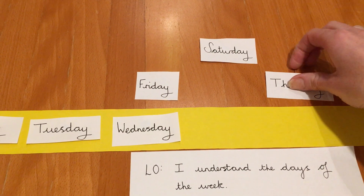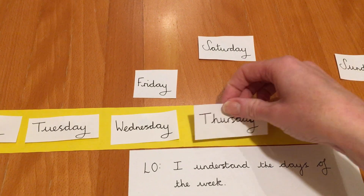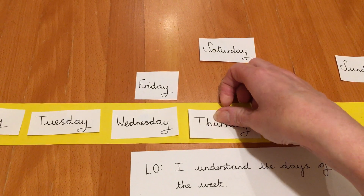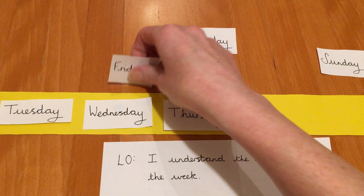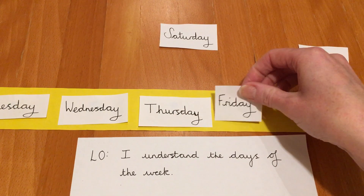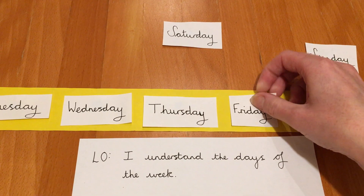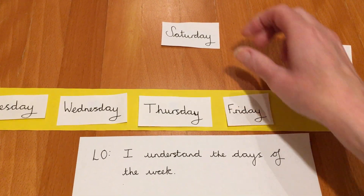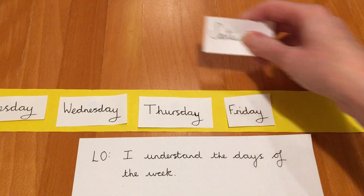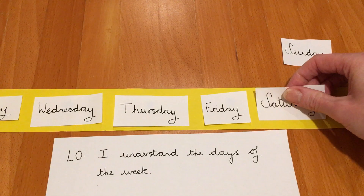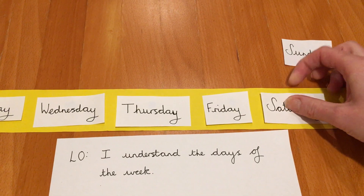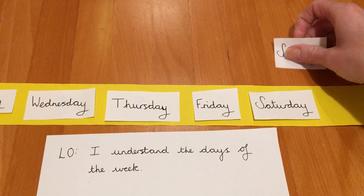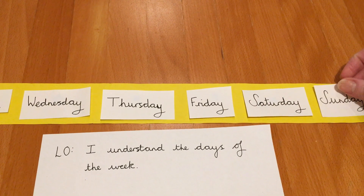And what follows Wednesday? Thursday. And what follows Thursday? Friday. And then we've made it to the weekend, haven't we? What follows Friday? Saturday. And the final day of the week, the seventh day of the week, is Sunday.